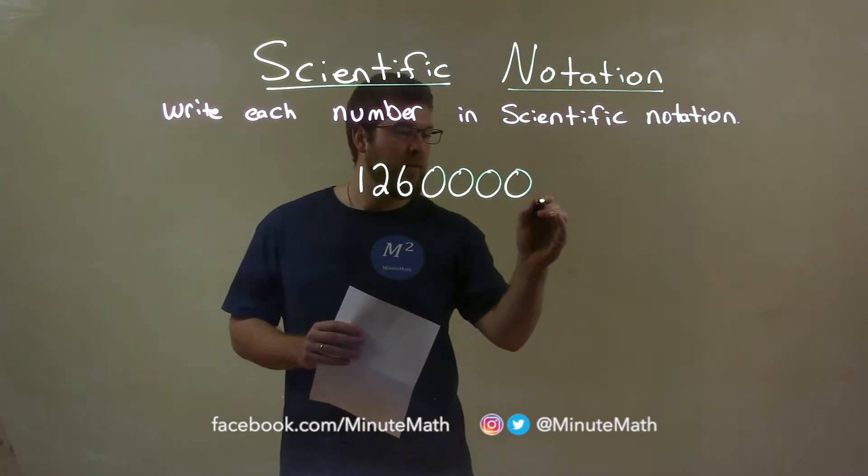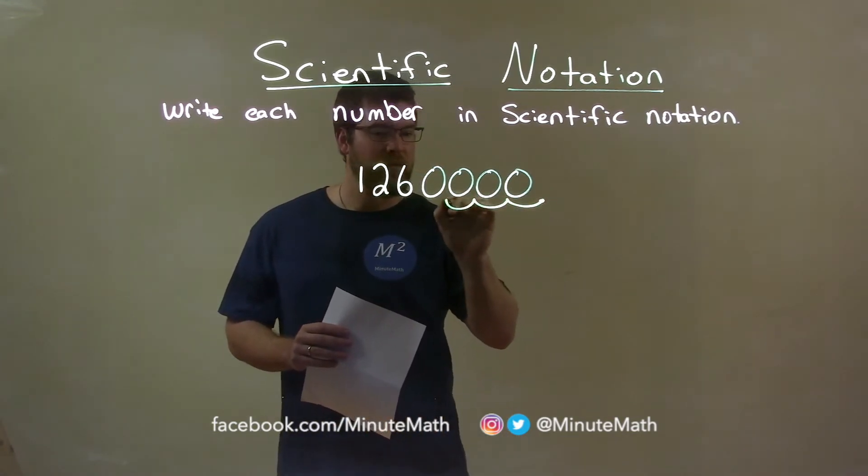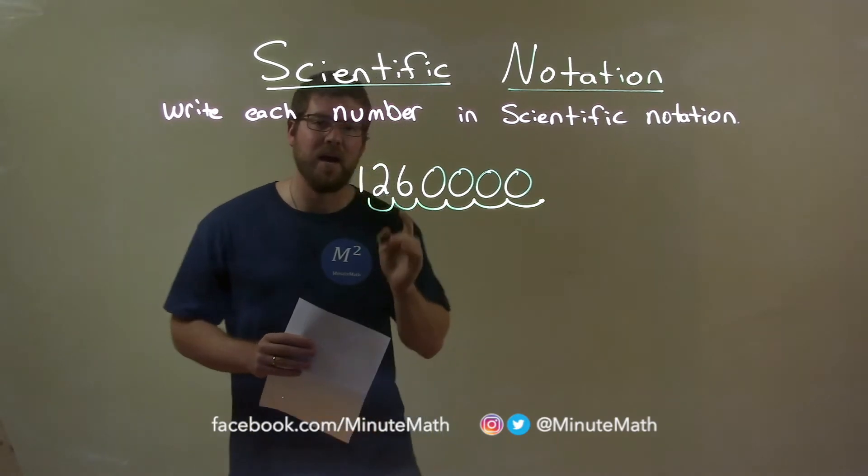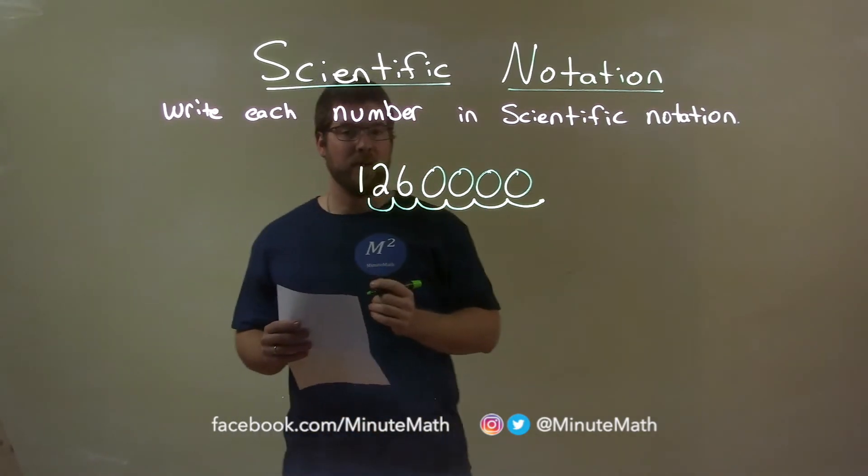So let's do that. We have one, two, three, four, five, six times. It took six decimal places to the left to get there.